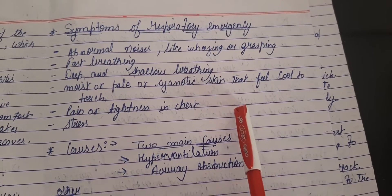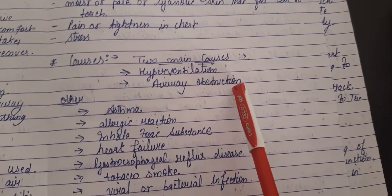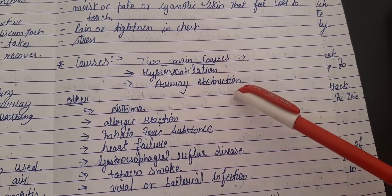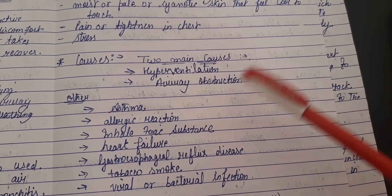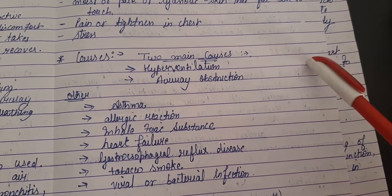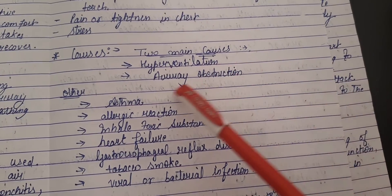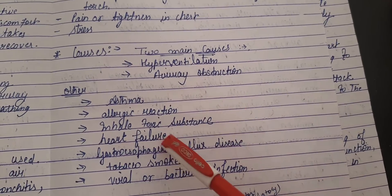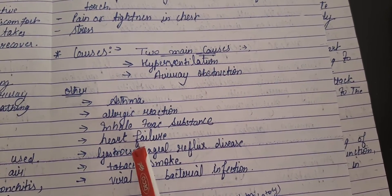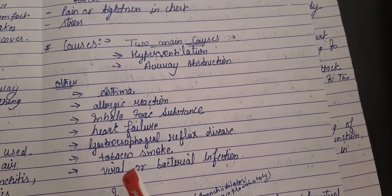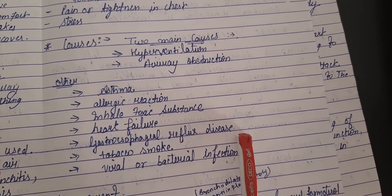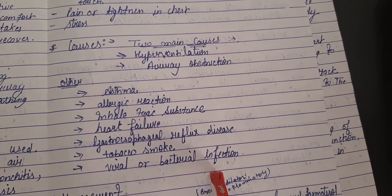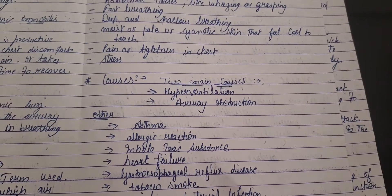Now we discuss the causes of respiratory emergencies. The main causes are hyperventilation, airway obstruction due to excess mucus production, swelling, or a foreign object; asthma; allergic reactions; toxic substance inhalation; heart failure; macro-smoking; gastroesophageal reflux disease; and viral and bacterial infections.